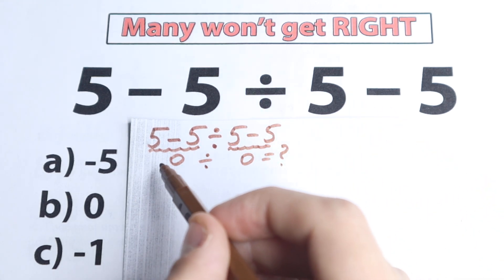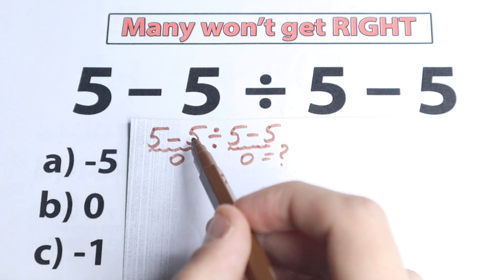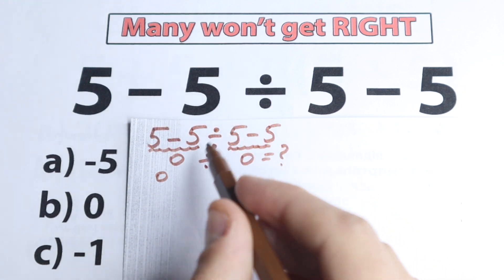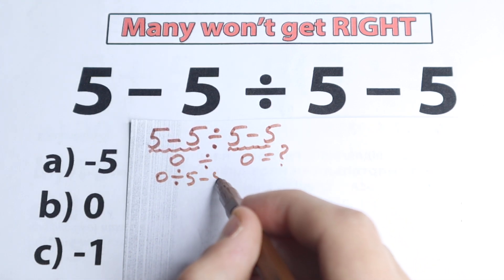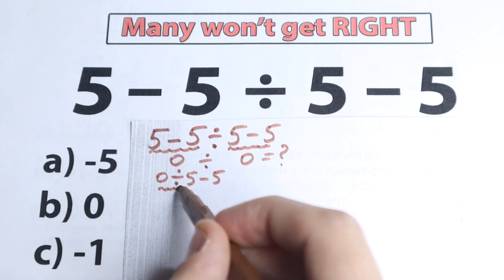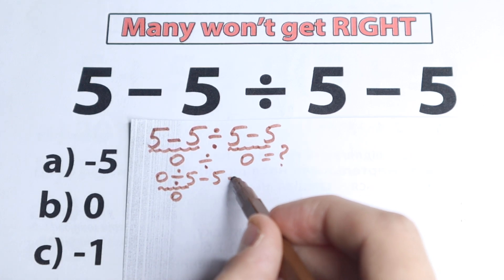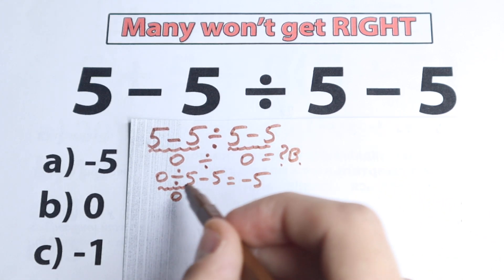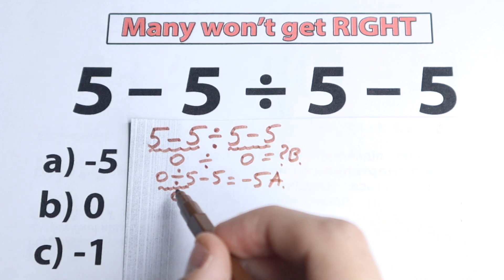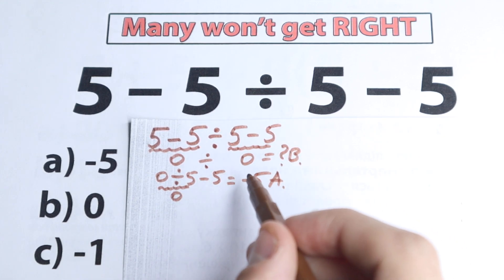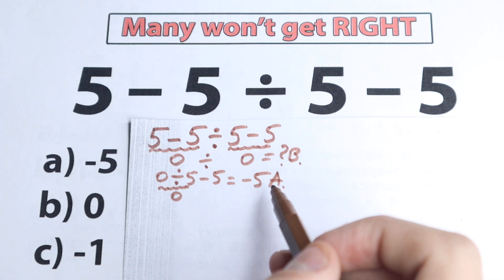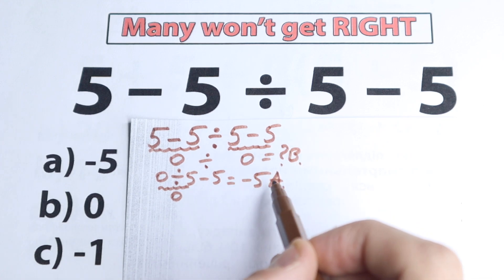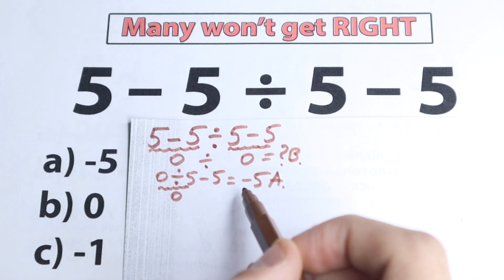Another part of students think that right here we have 5 minus 5, which gives 0, then they divide that 0 by 5, so they get 0 divided by 5 minus 5, which equals 0 divided by 5 equals 0, then 0 minus 5 equals minus 5. And they say maybe option B is correct or maybe option A is correct. A lot of students solve it in different ways, but in math we need to know the one and only correct answer. Some say 0 is correct, some say minus 5 is correct.